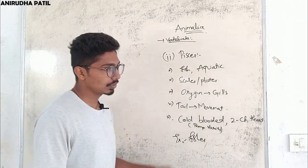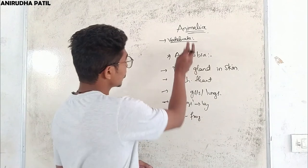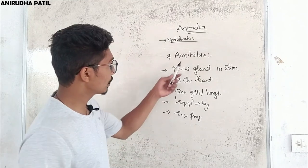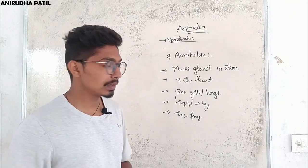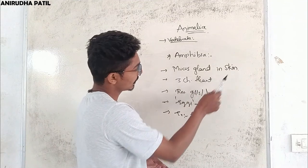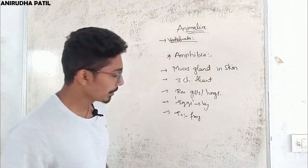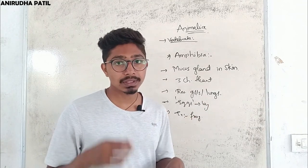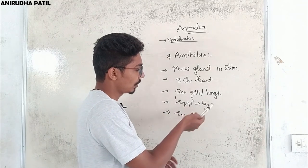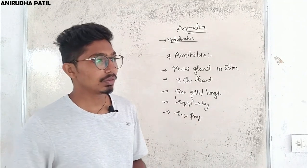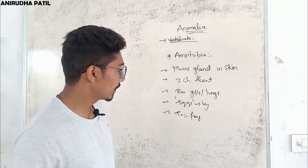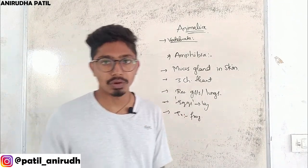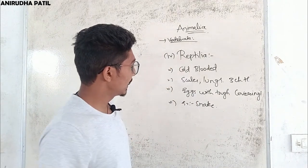The next group of Vertebrata is Amphibia. They differ from Pisces because they lack scales on the body. They have mucus glands in the skin, and the heart is three-chambered. Respiration is through gills or lungs. For example, a frog in its larval stage takes in oxygen with the help of gills, and in its next stage it respirates through lungs. They lay eggs. Amphibians can live both on land and in water.